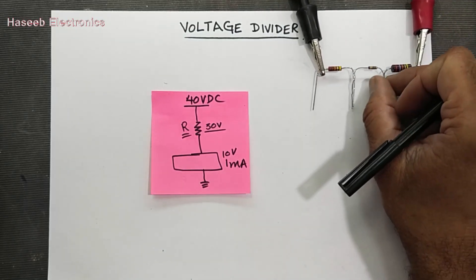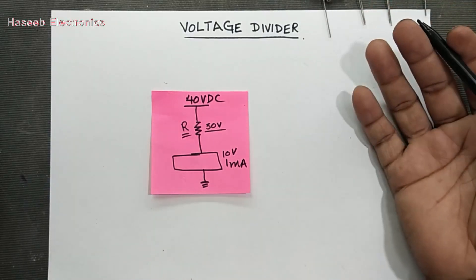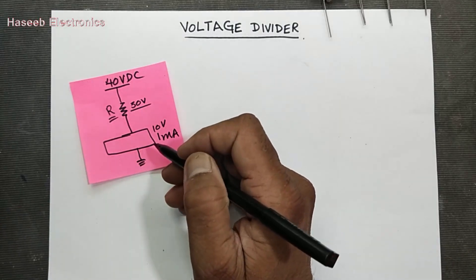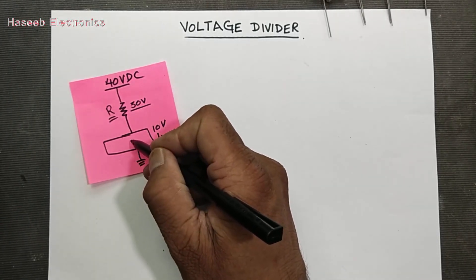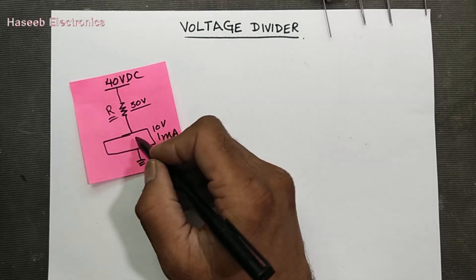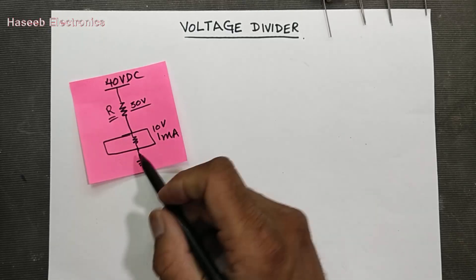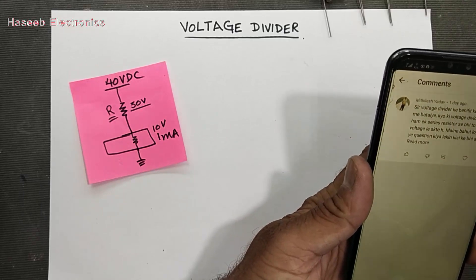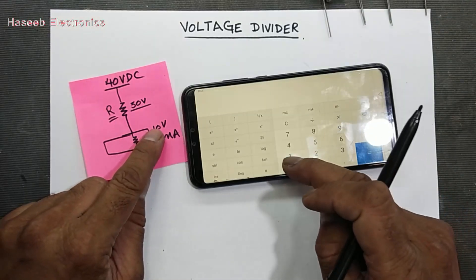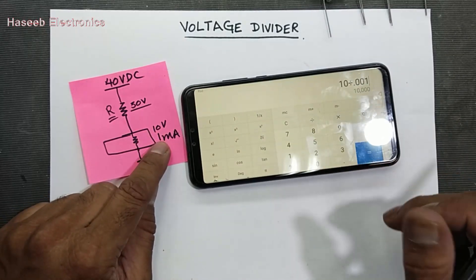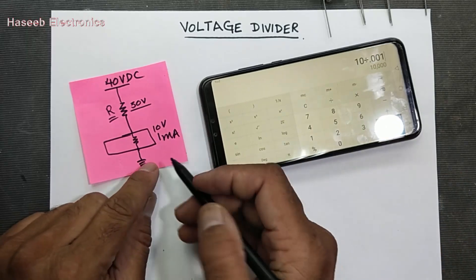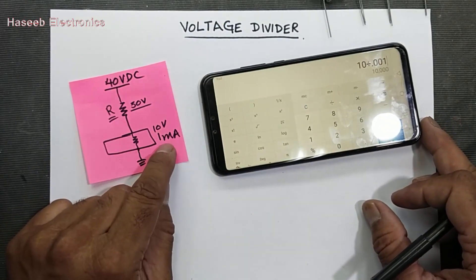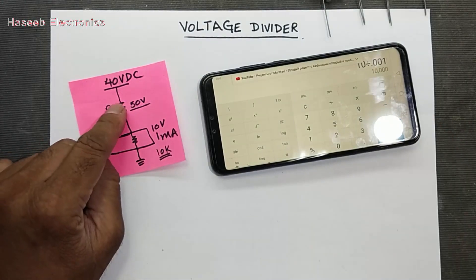What is a divider? Anything which makes divisions or distributions. In the first condition, we have a load composed of some inductors, resistors, capacitors — so it has an impedance, that is the total resistance of the circuit. We can determine its resistance very easily. If we have 10 volt divided by 1 milliampere, the resistance is 10 kilo-ohm. Because we need 10 volt and 1 milliampere, the remaining 30 volt will drop across the series resistor.